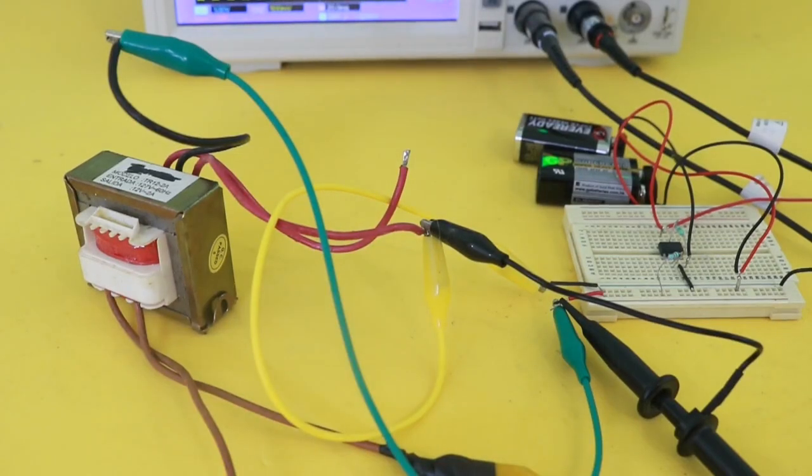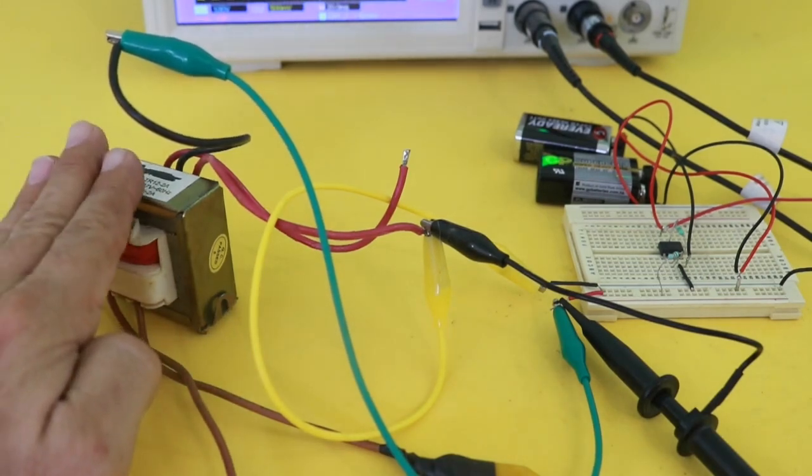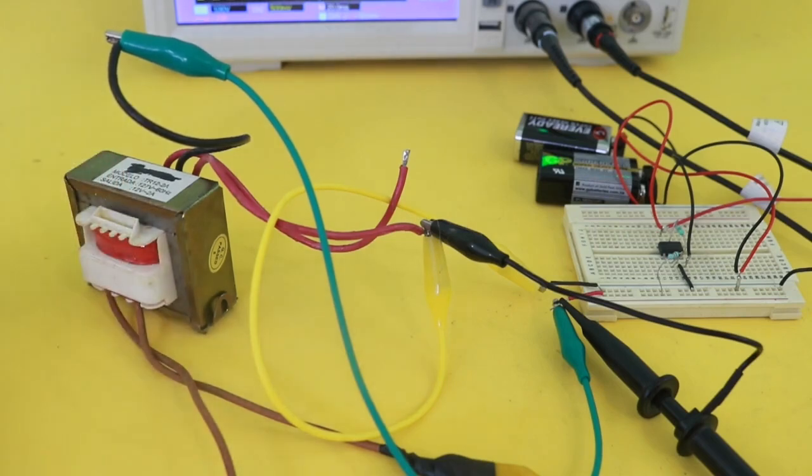Let's now check the behavior with an AC input. Here I have this transformer, 6 volts AC at the input, and I'm going to use the oscilloscope to see what happens at the output.